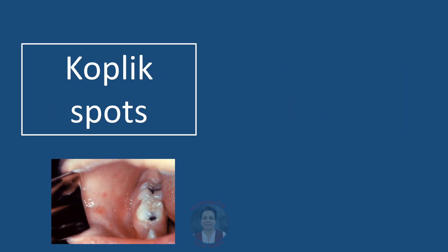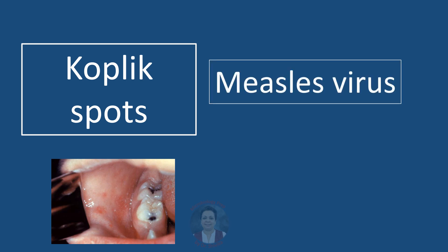A child presenting with cough, coryza, conjunctivitis, and bluish-white ulcerations in the oral mucosa — specifically around the lower molar teeth — these are called Koplik spots. The likely agent causing these symptoms is measles virus.